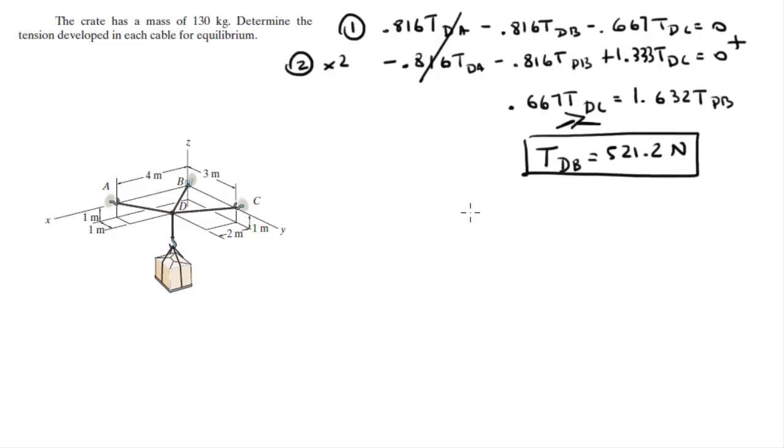So just replace this by the value we found before. And then you plug those into any equation of the three you want, and you solve for TDA, and you get that TDA is equal to 1563.6 N.